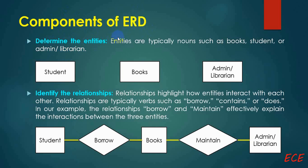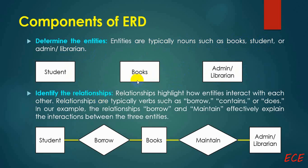First we need to determine the entities for our ER diagram. Entities are typically nouns such as book, student, librarian, or admin. We draw them in a rectangular shape box. Here you can see these three are used as examples. Then we need to identify the relationships among these entities.